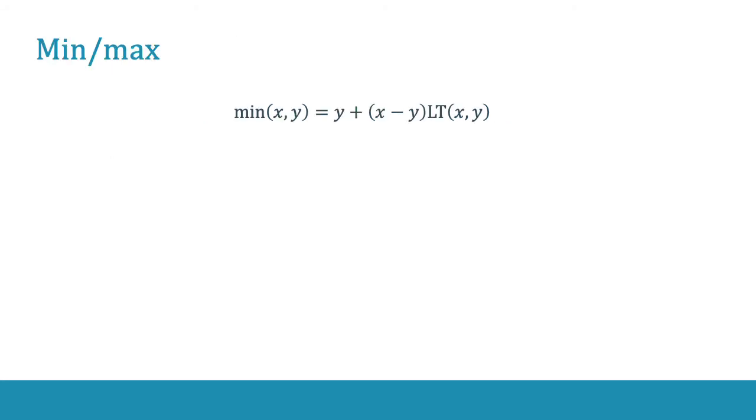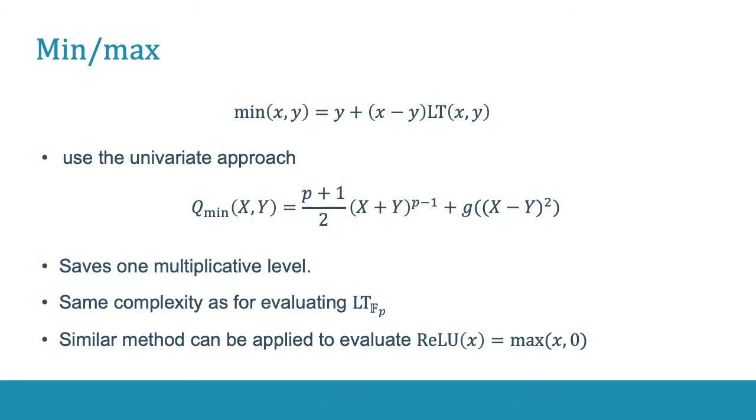We can apply our observations to the minimum-maximum functions that can be easily obtained from the less-than function. If we use the univariate method, then the minimum function will look like this. This saves one multiplicative level, as the complexity and the depth of the minimum function is the same as of the less-than function. Plus, we can compute the ReLU function, which is very popular in machine learning.